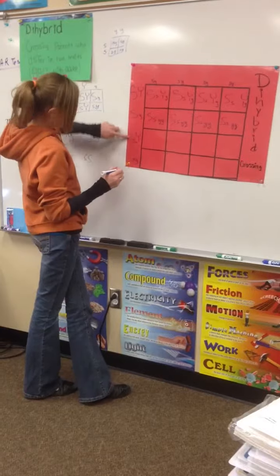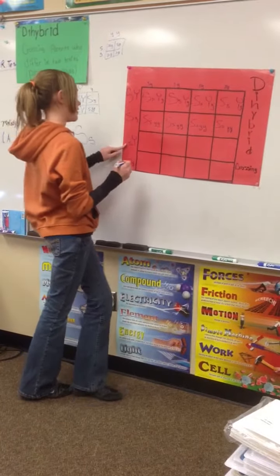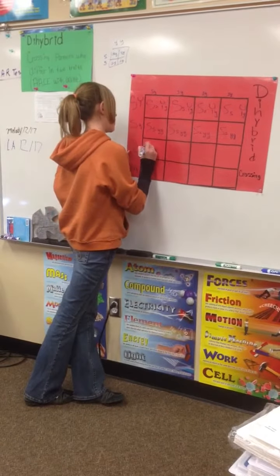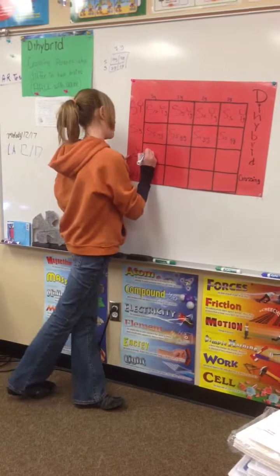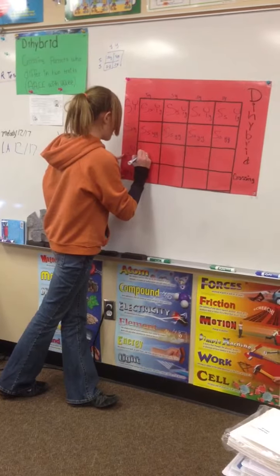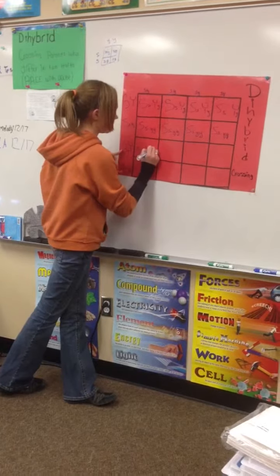And for the third line, it's little s, big Y. And the top is little s, little y. So it's little s, little s, big Y, little y.